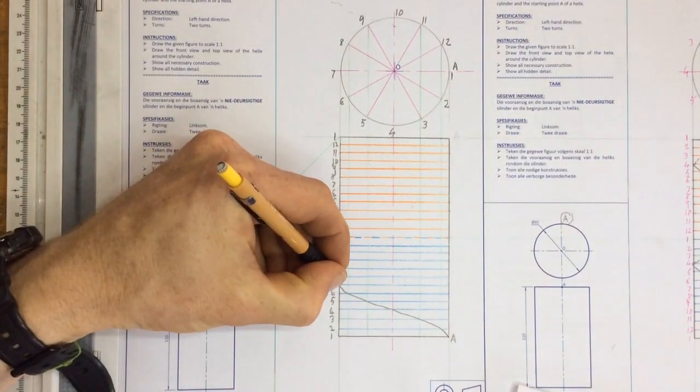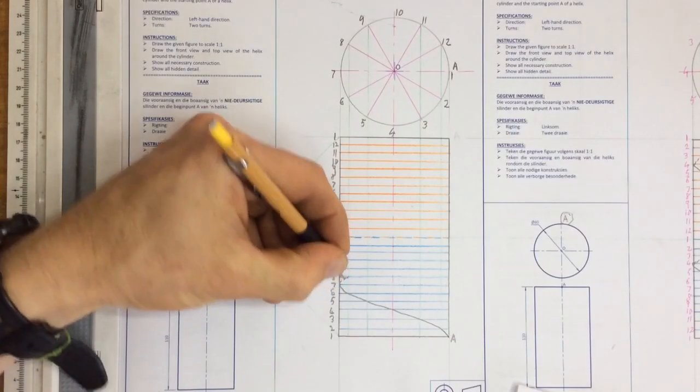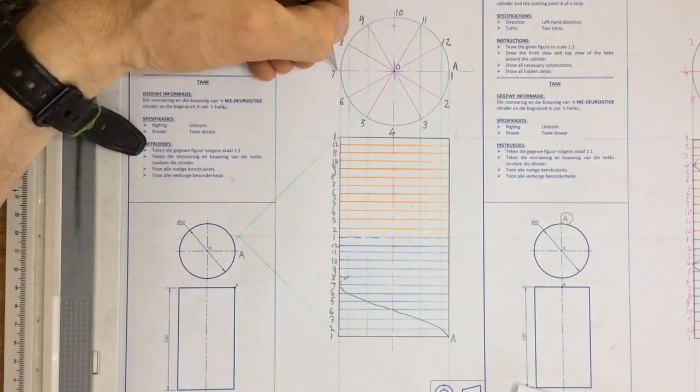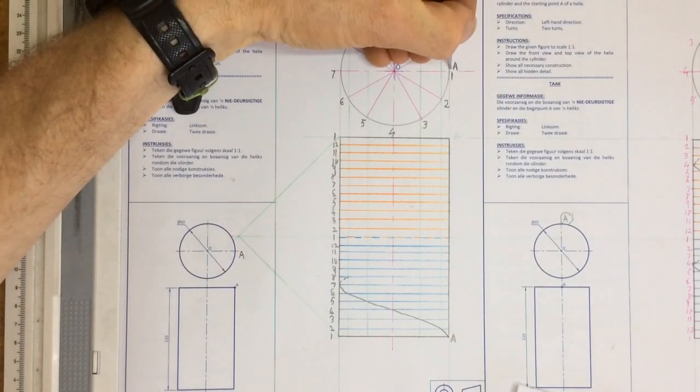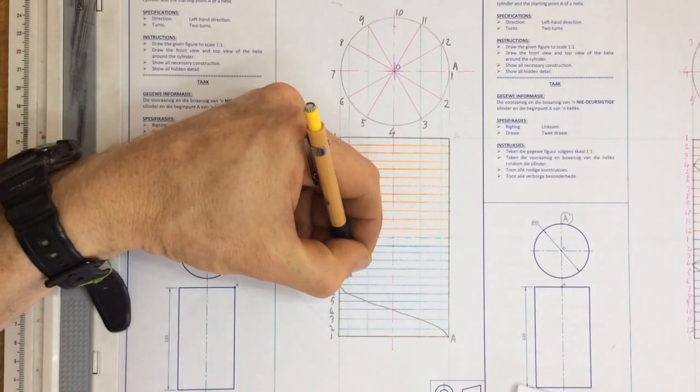Then it goes hidden detail over here, going between eight and nine. Why? Because all of those from seven to eight all the way around to one over there is going to be in hidden detail.